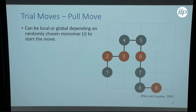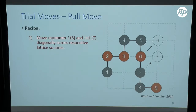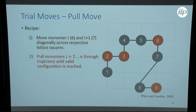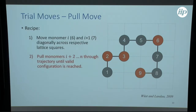The second kind of move is called a pull move, which is the move we use most often and really makes everything work so well. It can be local or global depending on the monomer chosen randomly. In one specific case: we choose monomer 6, move monomers 6 and 7 diagonally across their lattice squares to new positions. Once we do that we don't have a valid configuration because the bond is too long between 7 and 8, so we pull the rest of the chain through the trajectory until we reach a valid configuration. That's why it's called a pull move.